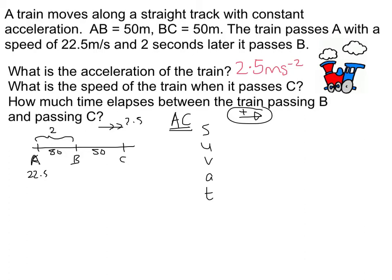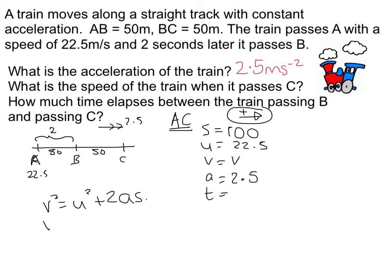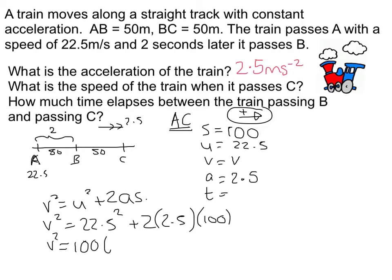I know the speed at A. So for the A to C SUVAT: the displacement is 100 metres, initial speed is 22.5 metres per second, V is what I'm trying to find, acceleration is 2.5, and I don't care about time. So I choose the equation without T in, which is V squared equals U squared plus 2AS. Substituting: V squared equals 22.5 squared plus 2 times 2.5 times 100. Solving gives V squared equals 1006.25, so V equals 31.7 metres per second.